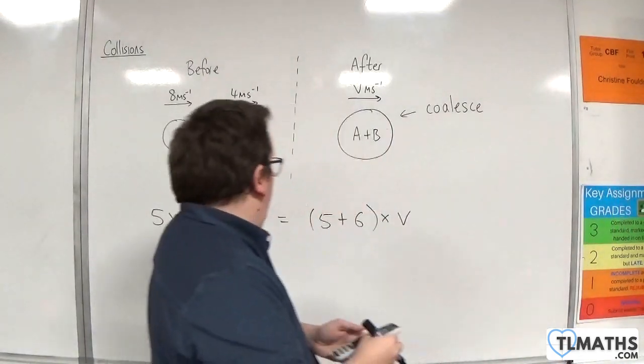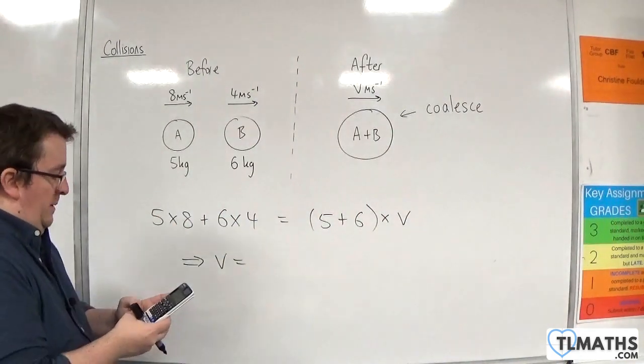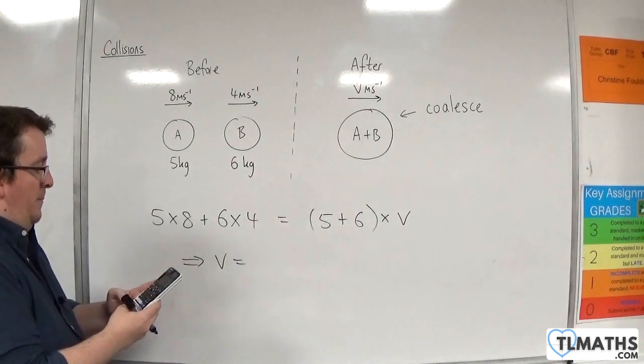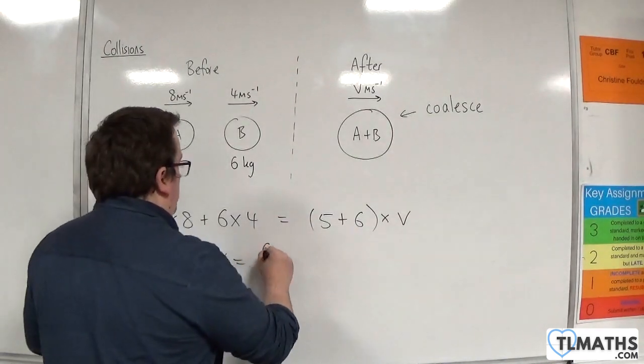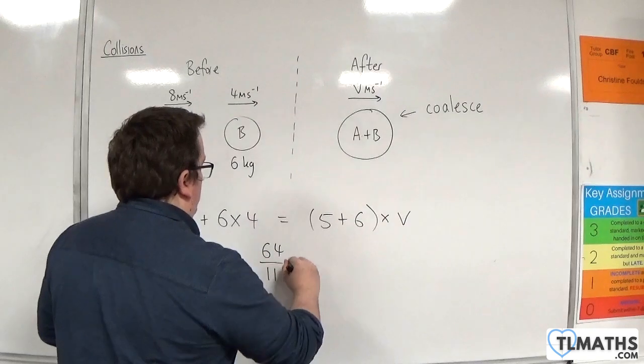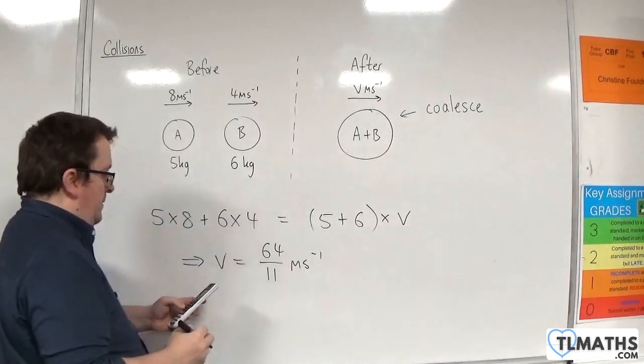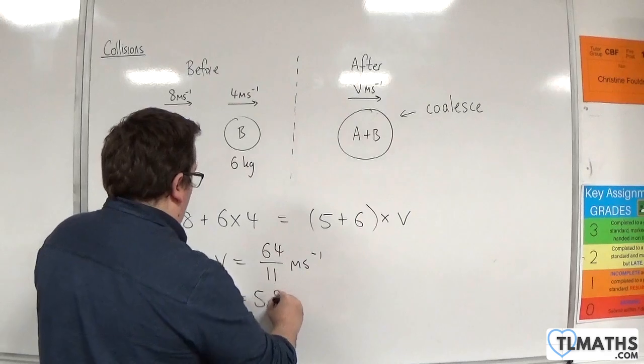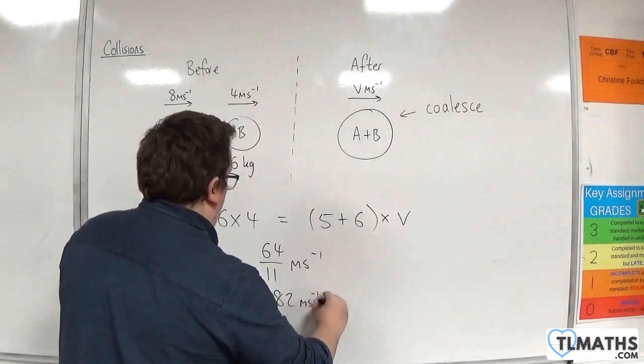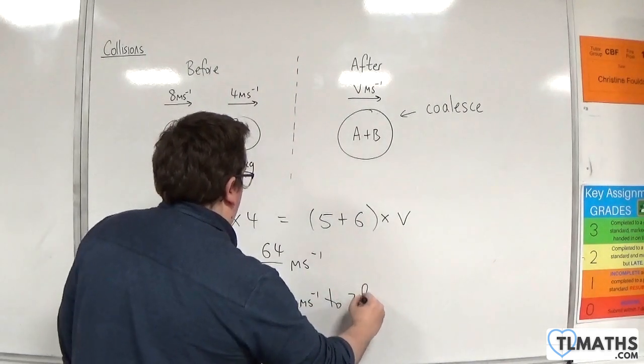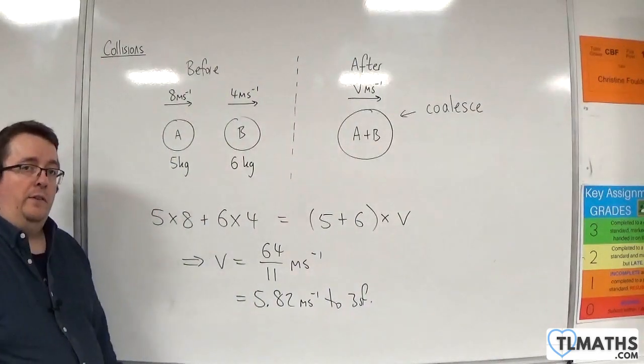So, we have 5 times 8, plus 6 times 4, and I'm going to divide that by 11. So, 64 over 11 metres per second, which is equal to 5.82 metres per second, to 3 significant figures.